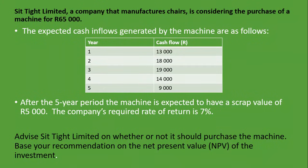In this example, we are told that Sittite Limited, a company that manufactures chairs, is considering the purchase of a machine for 65,000 rand. That's the investment. The expected cash inflows generated by the machine are given over 5 years, with cash flows listed from year 1 to year 5.